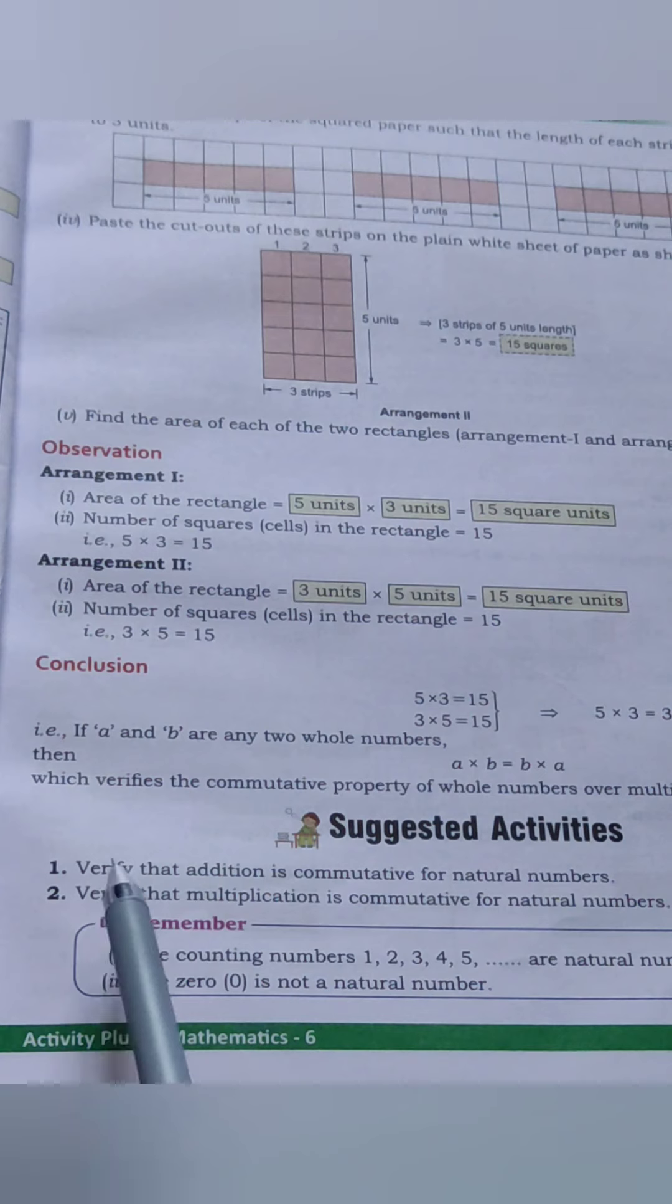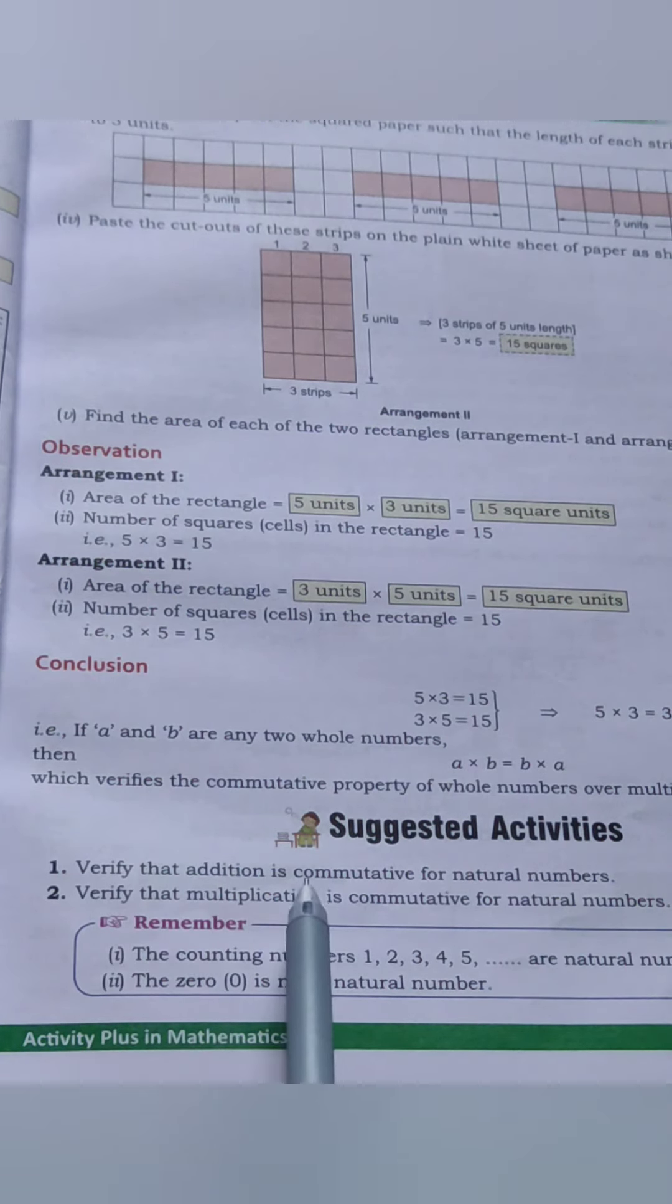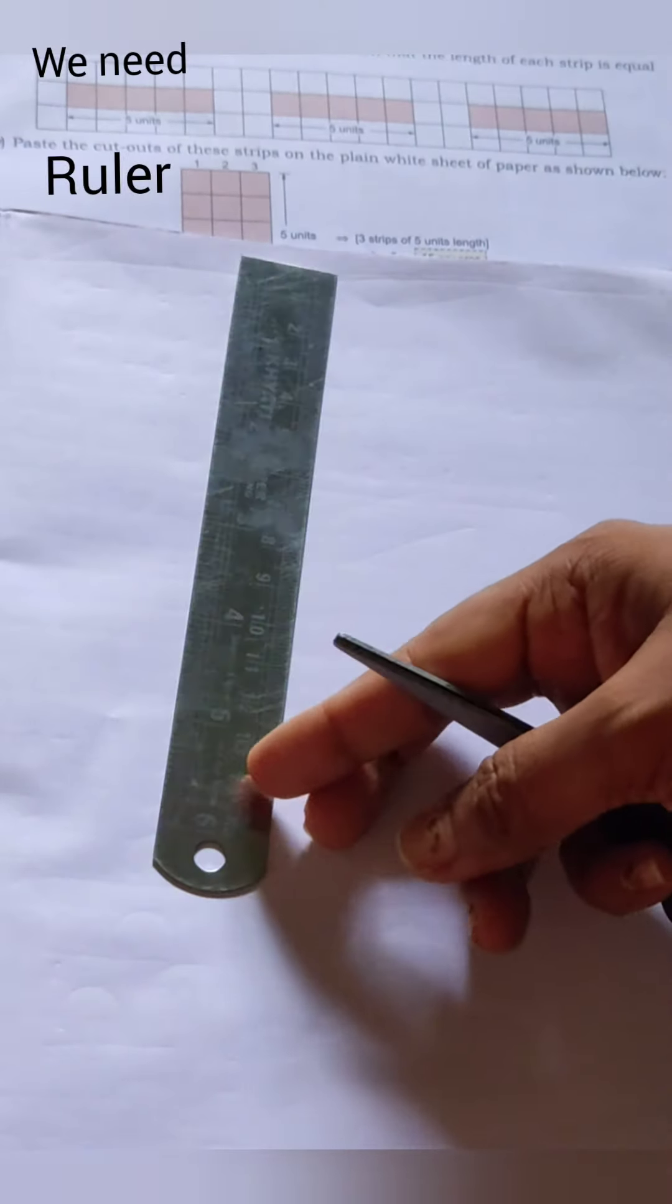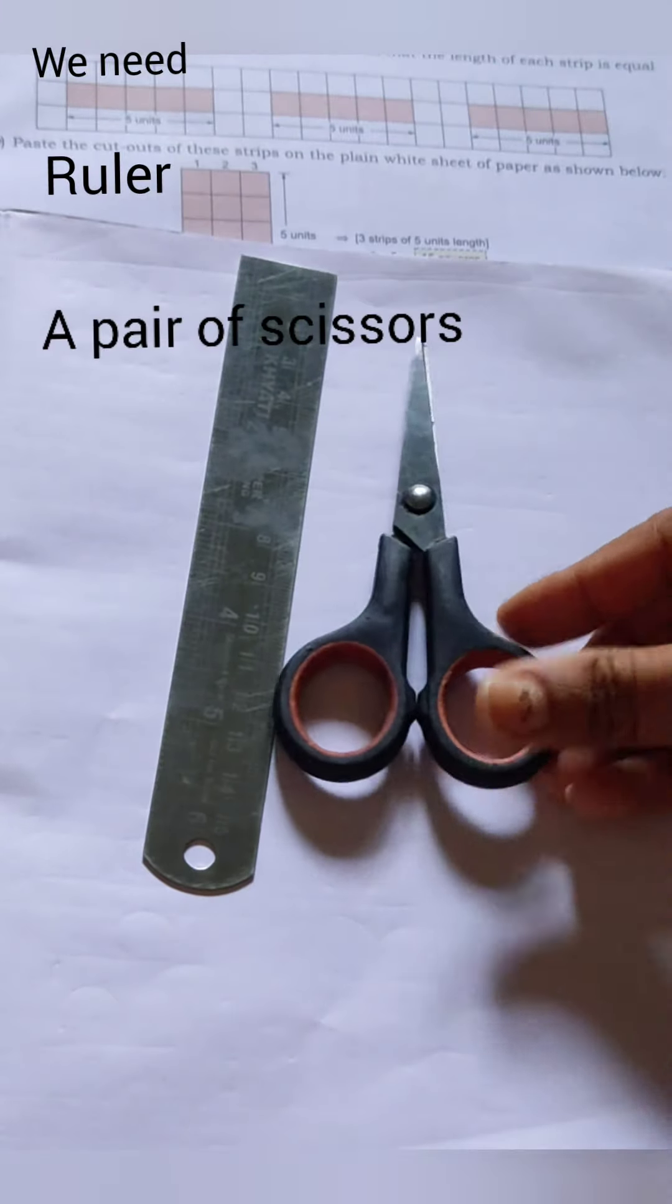Let's start without wasting any time. The activity is to verify that addition is commutative for natural numbers. For this we need a ruler, a pair of scissors, colored papers—any color paper you can take—and glue.